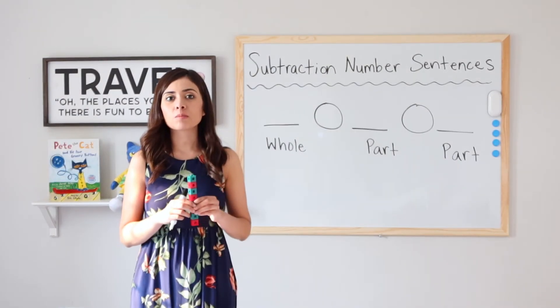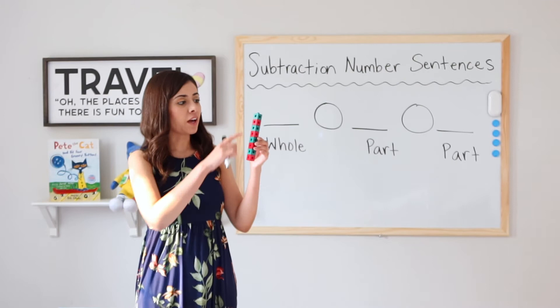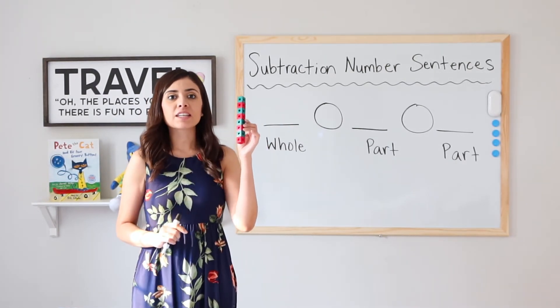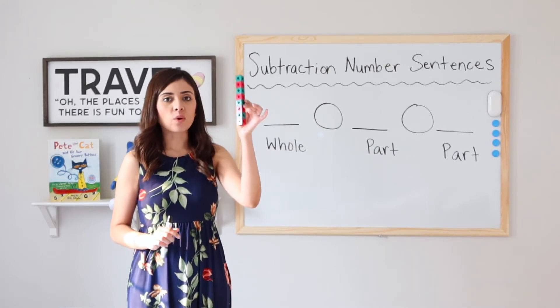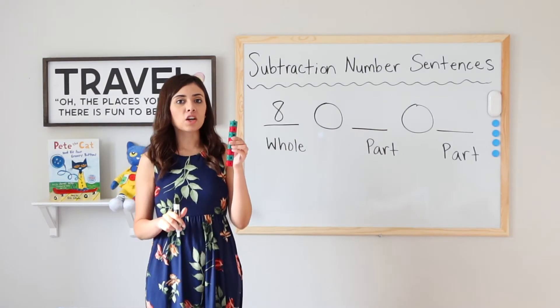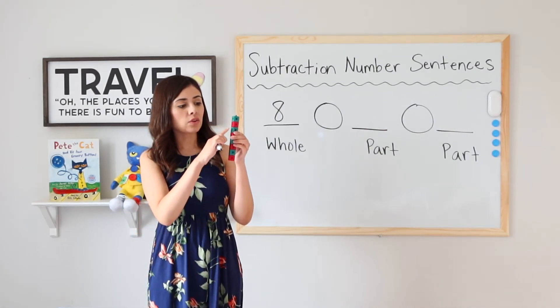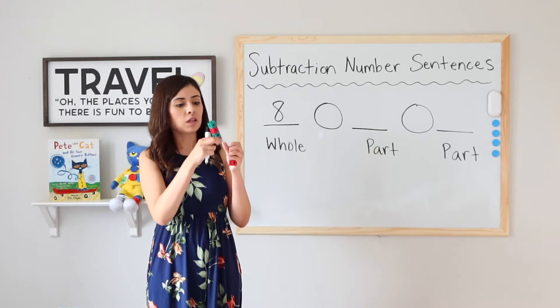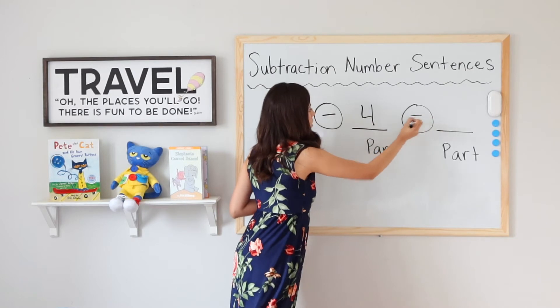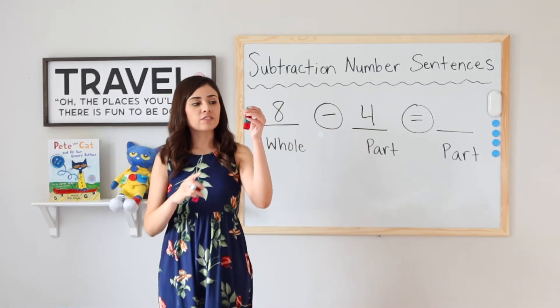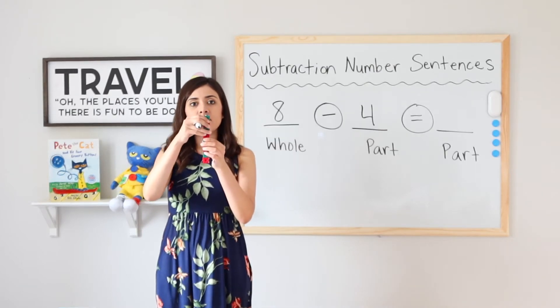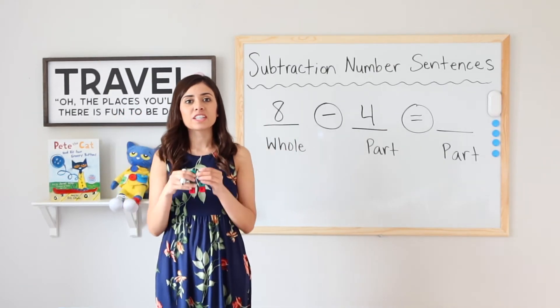Let's go ahead and try a couple of examples with counting cubes. I have 1, 2, 3, 4, 5, 6, 7, 8 counting cubes. That is my whole. 8. I'm going to take away 4. 1, 2, 3, 4. So now I have 8 minus 4 equals how many do I have left? 1, 2, 3, 4. That means that 8 take away 4 equals 4. Great job.